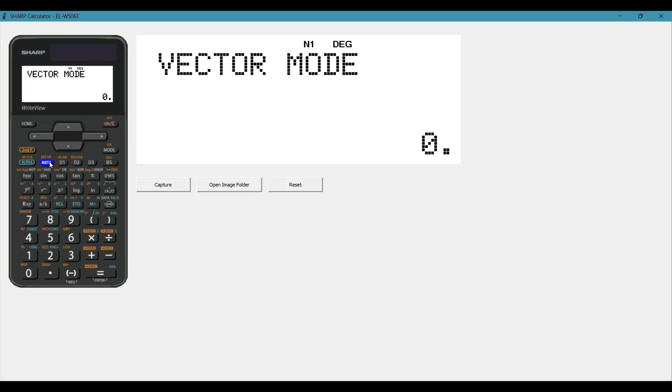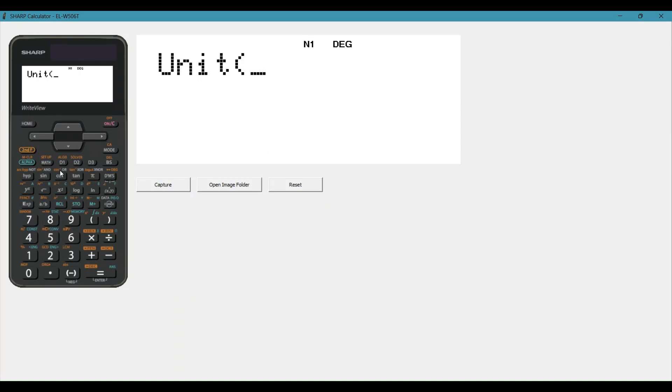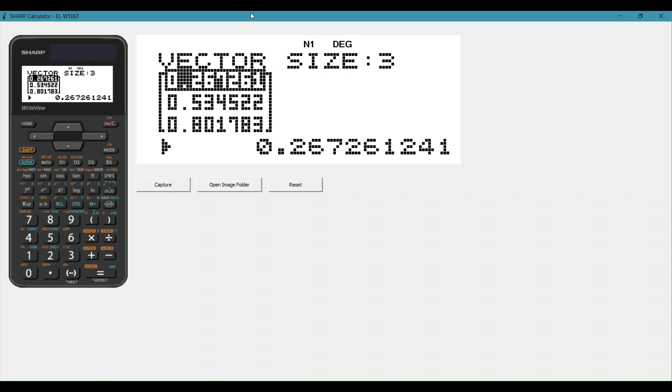To find our unit vector, we just say math, and you can see number 7 says unit. Put in our vector name, we'll just use vector A for example, and press equals, and there's our unit vector.